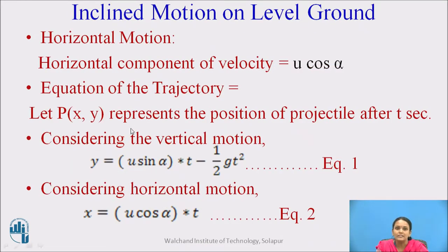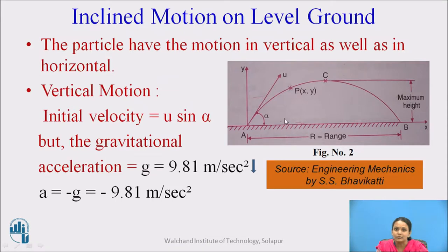By considering the horizontal motion, the horizontal component of the velocity is U cos alpha. By these two equations, we can calculate the equation of trajectory. Trajectory means it is the curved path traced by the particle.